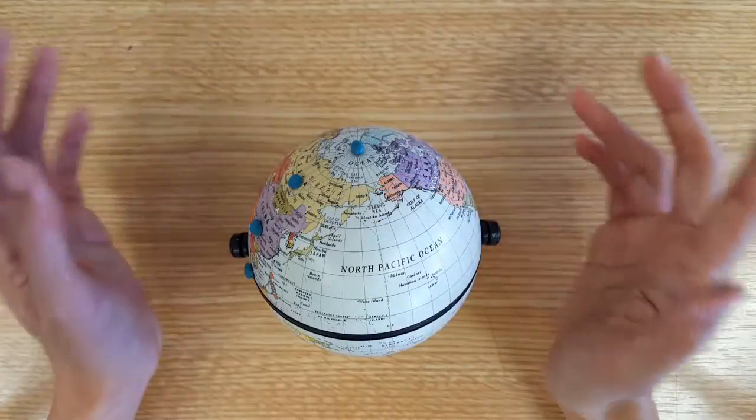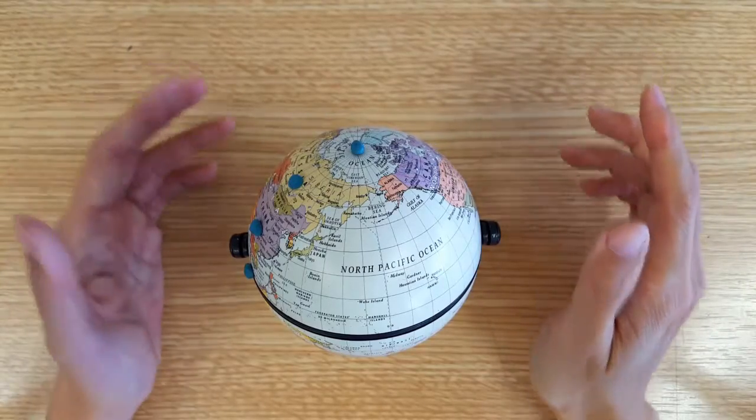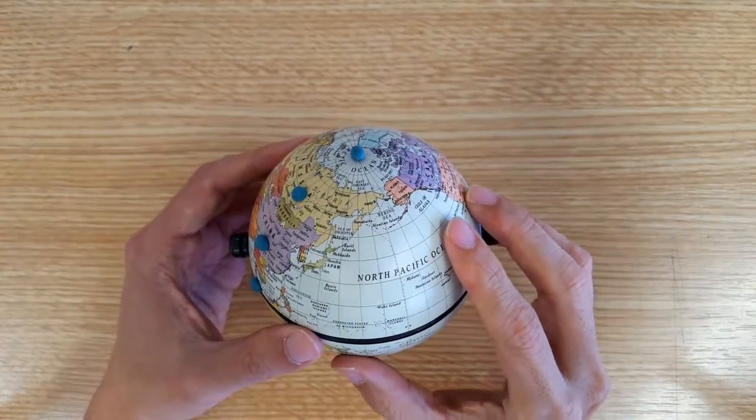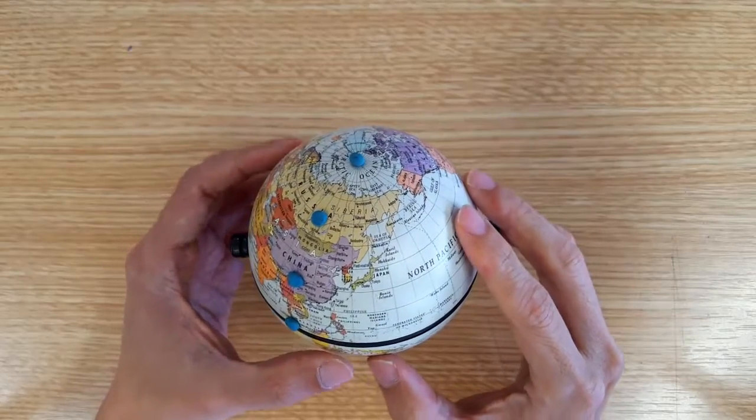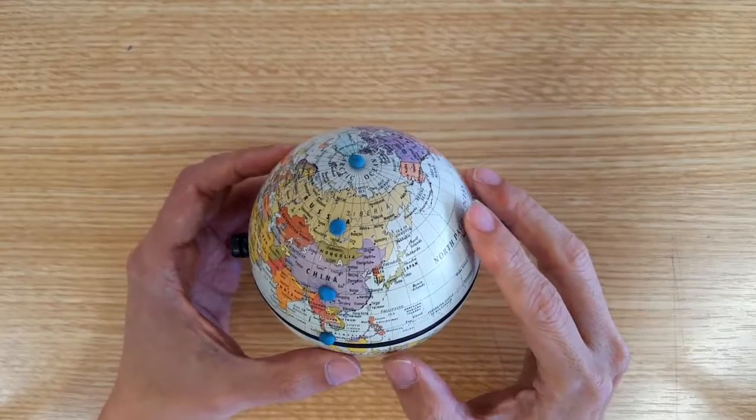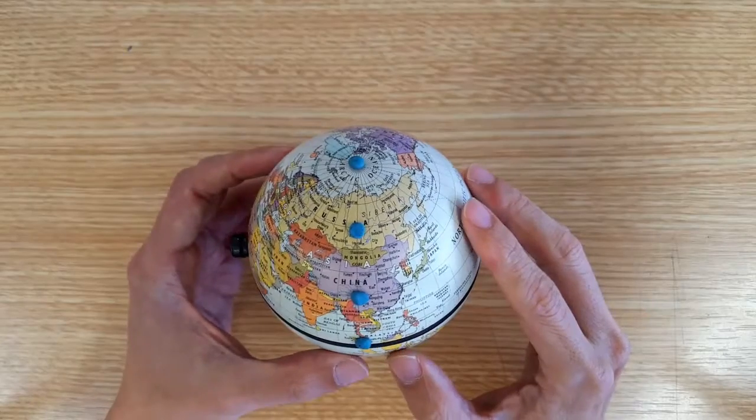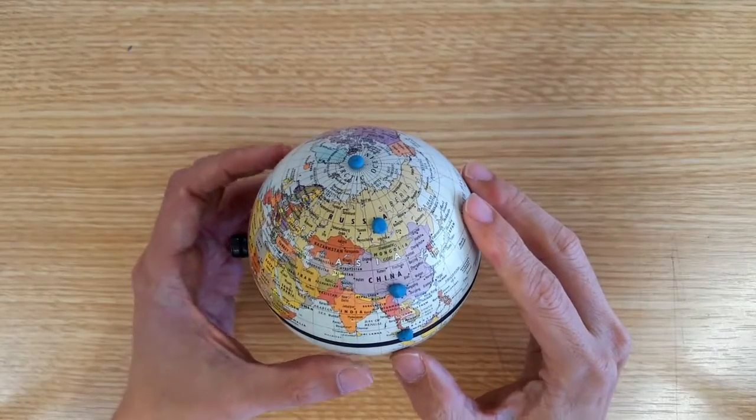Now this rotational speed is an important number because actually we are all rotating together with the Earth, so we are all actually doing a circular motion with an angular velocity of 7.27 times 10 to the power of negative 5 radians per second.